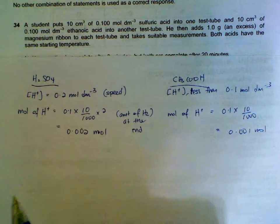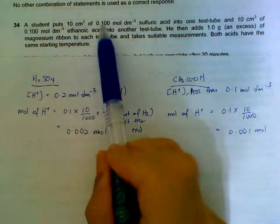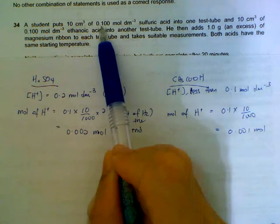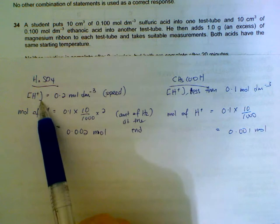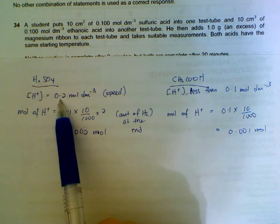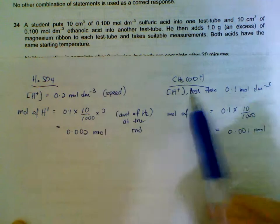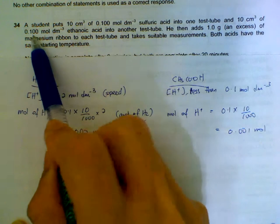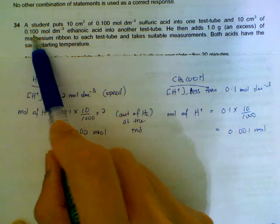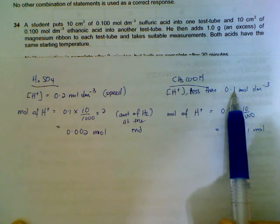First of all, we compare the concentration of H⁺ hydrogen ions. For sulfuric acid, although it's 0.1 mol per dm³, we must remember that sulfuric acid has two hydrogen ions that can be released. So its concentration of H⁺ is 0.2 mol per dm³. For ethanoic acid, it is a weak acid. So although the acid is 0.1 mol per dm³, the H⁺ concentration is much, much lesser than 0.1 mol per dm³.